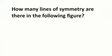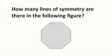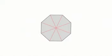How many lines of symmetry are there in the following figure? A regular octagon has 8 lines of symmetry. 4 of them are drawn to opposite sides, like this. And the other 4 are drawn through opposite vertices. And when you combine the 2, you get the 8 lines of symmetry.